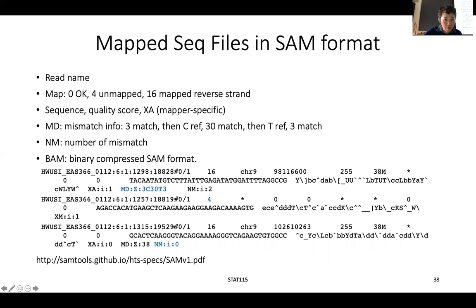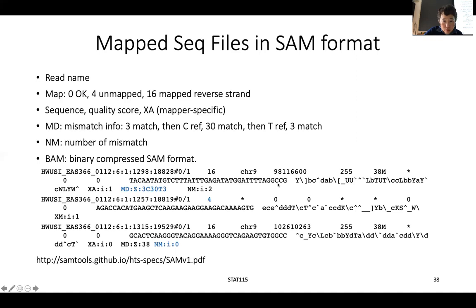For mismatches, NM indicates the number of mismatches. If NM is zero, everything matched perfectly. If there are two mismatches, you can read where they are: for example, the first three bases match, then the reference has a C but our sequence has an A. Then 30 nucleotides match, and then the reference has a T but our sequence has a D. So the mismatch field tells you exactly where mismatches appear.